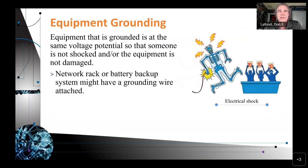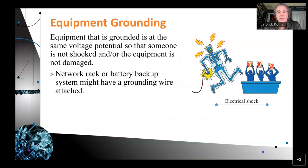Equipment grounding. Equipment that is grounded is at the same voltage potential so that someone is not shocked and the equipment is not damaged. Network rack or battery backup systems might have a grounding wire attached. With the equipment we work with, everything is grounded to the rack and then the rack is bolted to the concrete floor. It is unlikely that you are going to get electrocuted by standing on that concrete floor, but it is possible. So always be cautious.